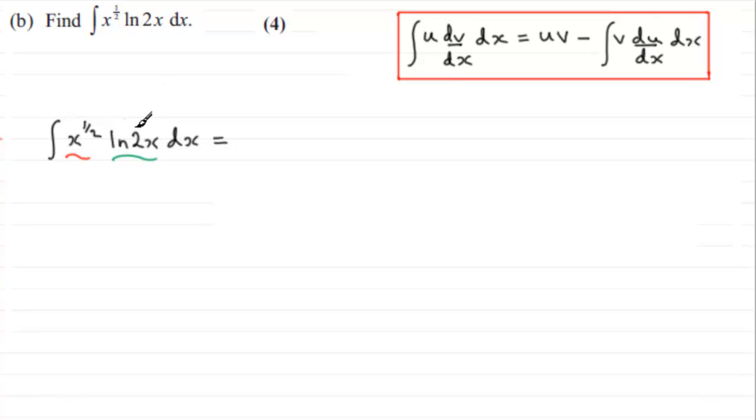Now when you're doing integration by parts where you have a natural log, what we do is we always make the log part the u part, and this part then is in this example the dv by dx part. So with that, we should be able to just proceed through this integral using the formula.